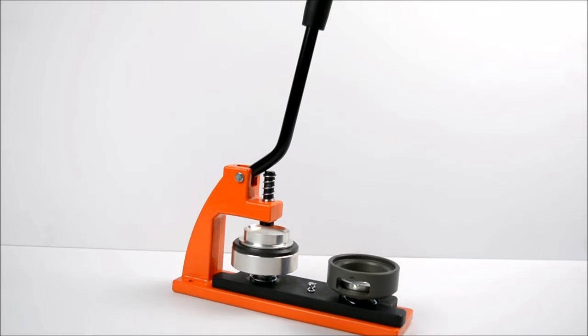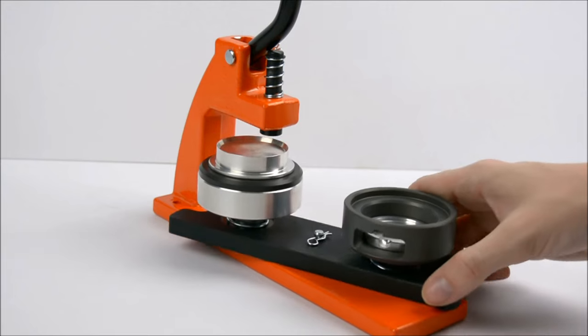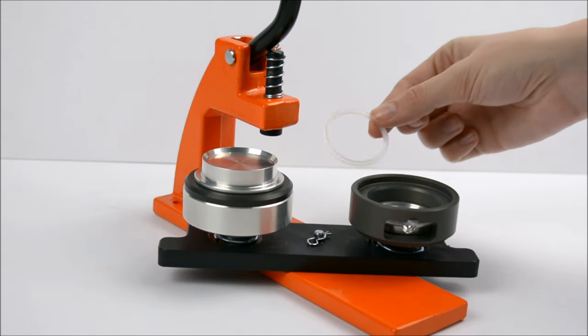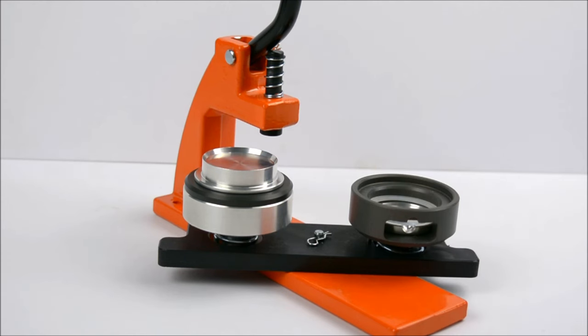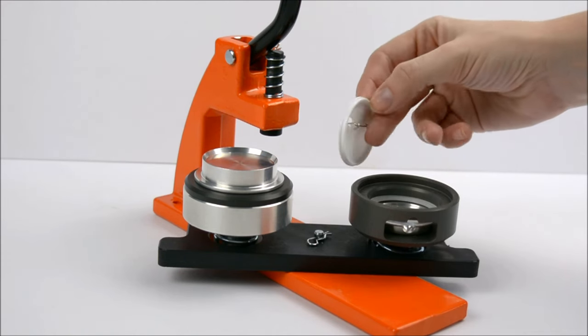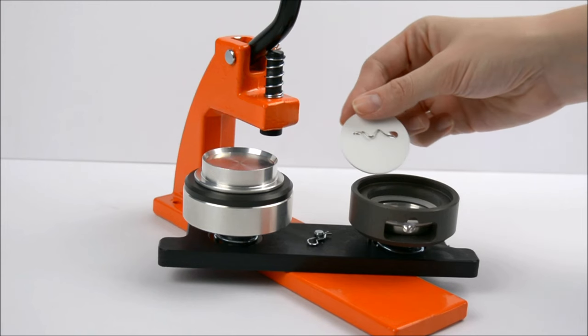If you are using a 45mm or 58mm machine, make sure there is a spacer in the second die. Then place the badge back into the die with the zigzag side of the pin facing up.